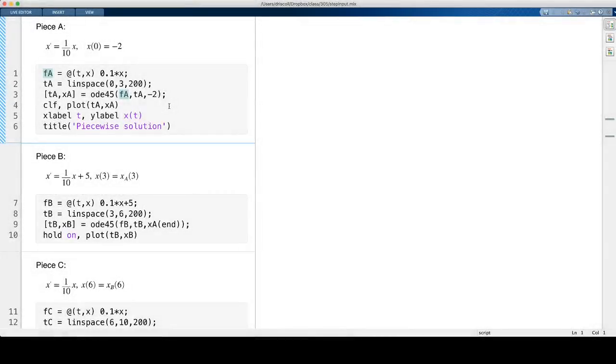I want to redo that last example with the step forcing numerically. The only thing I want to do is change the problem slightly in order to make a nicer picture. I'm just changing the coefficient that used to be 1 here. I'm just making it 1 tenth instead.